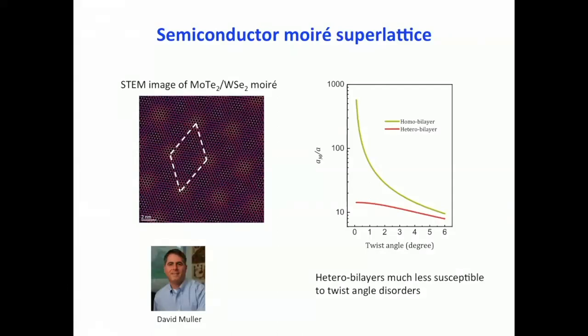On the left you can see STM images of the moiré superlattice structure — you can see the individual atoms as well as the interference pattern, the moiré structure. Even zooming out to hundreds of sites, it's actually quite regular in this kind of hetero-bilayer structure. This is in collaboration with Dave Muller's group at Cornell. The message is that the hetero-bilayer tends to have less twist-angle disorder compared to the homo-bilayer case, though other types of disorder should still be present.